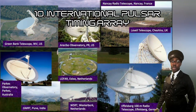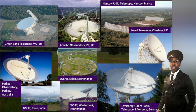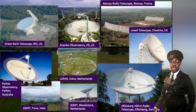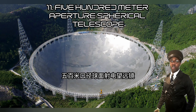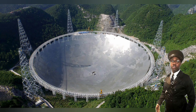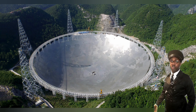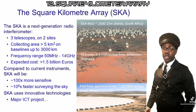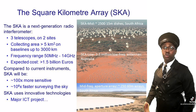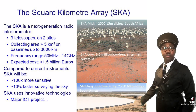The International Pulsar Timing Array is a radio telescope collaboration that includes the European Pulsar Timing Array, the North American Nanohertz Observatory for Gravitational Waves, the Parkes Pulsar Timing Array in Australia, and the Indian Pulsar Timing Array. FAST, also known as the 500-meter Aperture Spherical Radio Telescope, is a radio telescope in southwest China whose 500-meter diameter dish is built inside a natural depression in the terrain. The Square Kilometer Array is planned as an intergovernmental radio telescope project in Australia and South Africa.